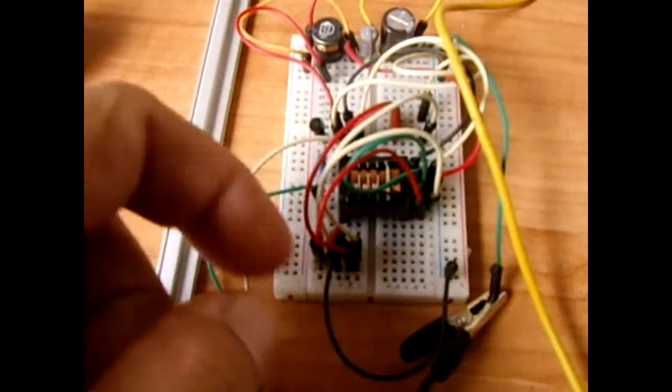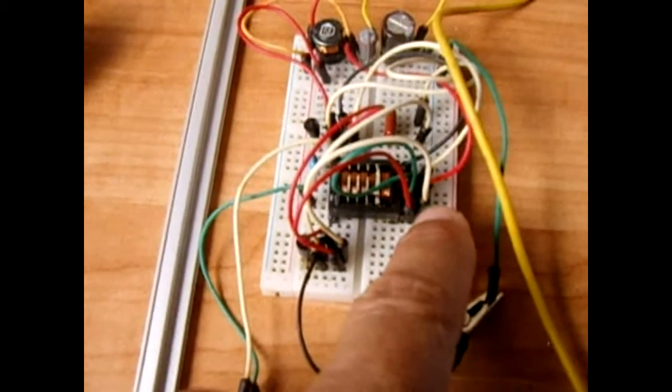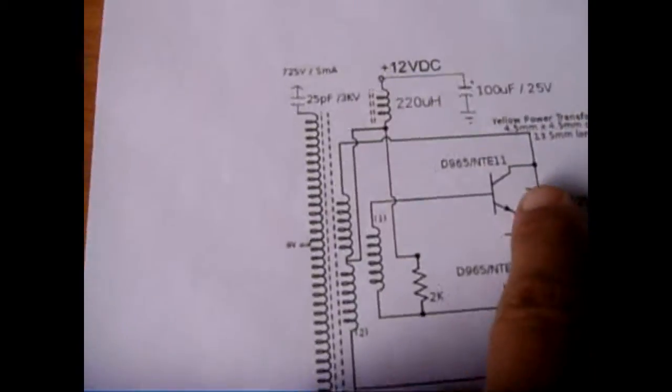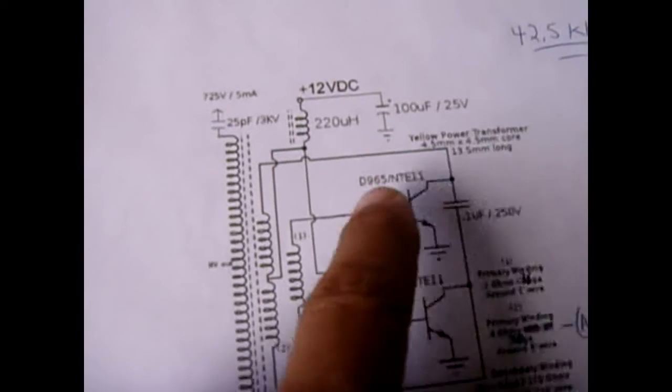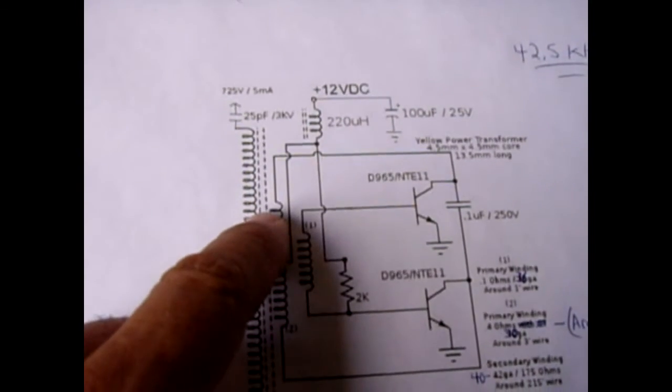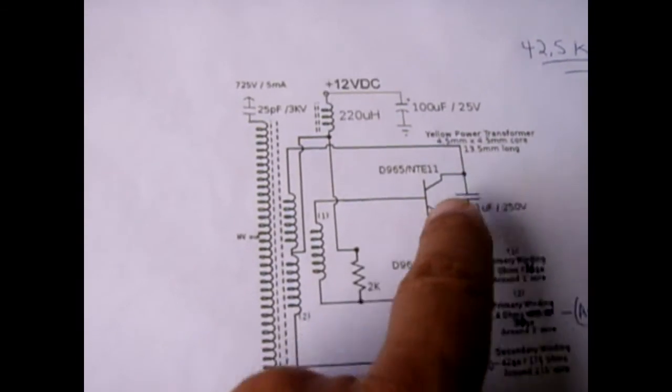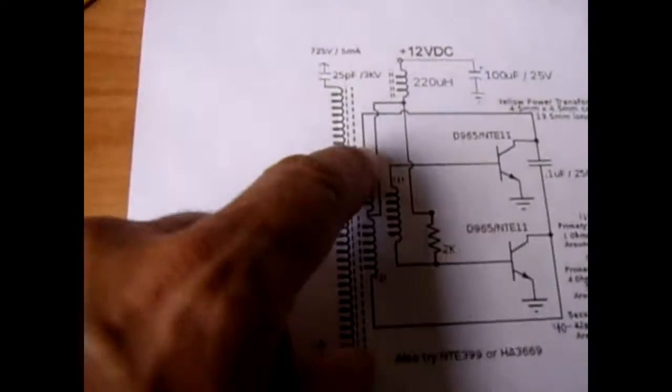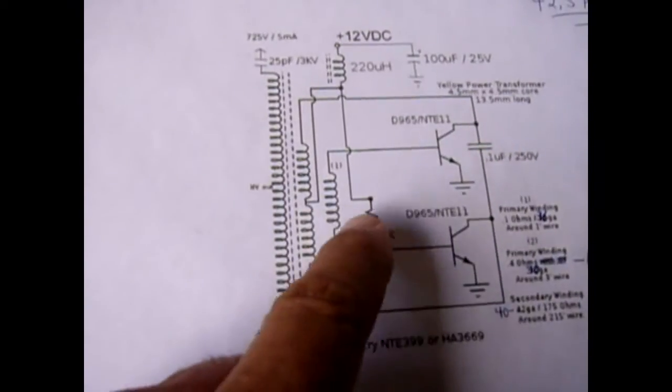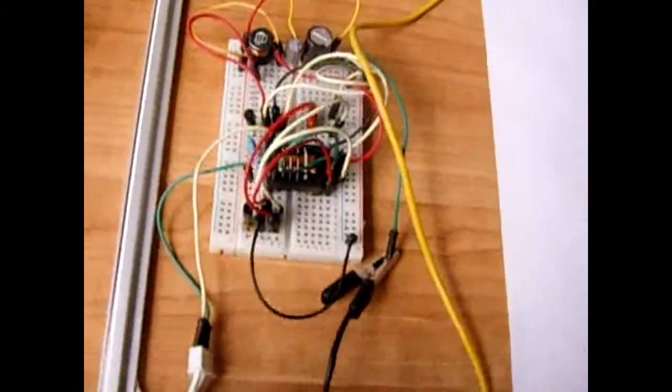The collector to the bifilar wound coil. You might want to take that wire there and put it in this position and take this one here and put it in that position. And by doing that it corrected the problem. Let's power it up.